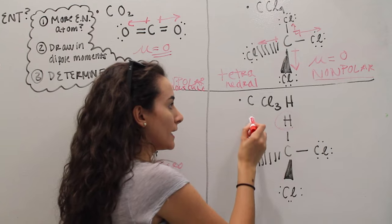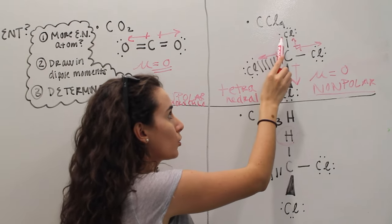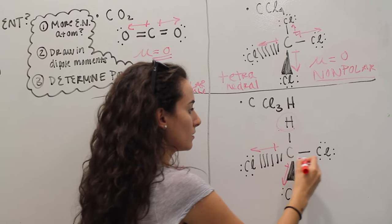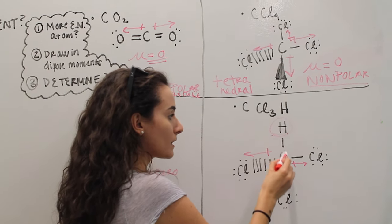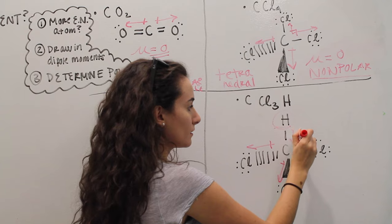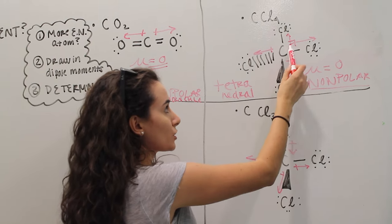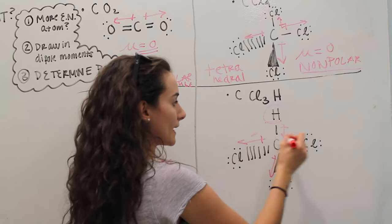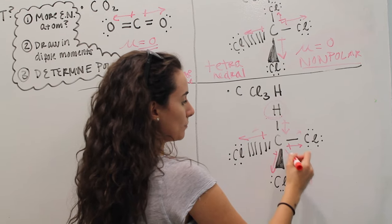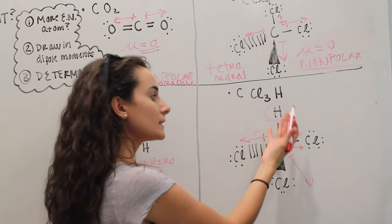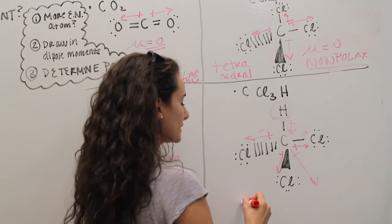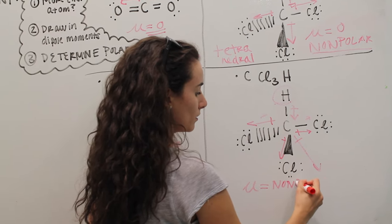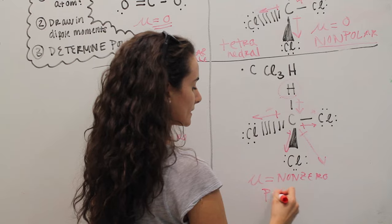For example, in chloroform we replaced a chlorine with a hydrogen. Let's draw our dipole moments. Carbon is more electronegative than hydrogen, so unlike our previous structure, the dipole moment for that bond will actually be facing down toward carbon. Even though some vectors may cancel, we will get a net dipole moment facing downward, and since there isn't an upward pull to balance that out, we end up with a non-zero dipole moment — which means that chloroform is a polar molecule.